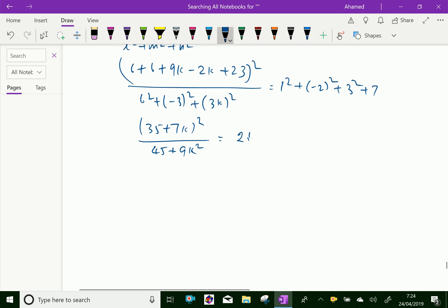By expanding and simplifying, we will get the quadratic equation, simply we will get 140k² - 490k - 280 = 0.